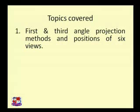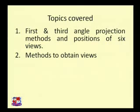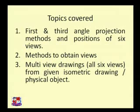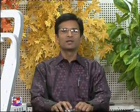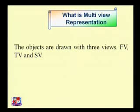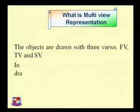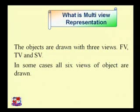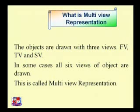Today's discussion will be based on three aspects: first, the difference between first and third angle projection methods and positions of six views; second, methods to obtain views; and third, multi-view drawing of all six views from a given isometric or physical object. We will also discuss the convention of line precedence — which kind of line should be drawn and when. In multi-view representation, objects are drawn with front view, top view, and side view.